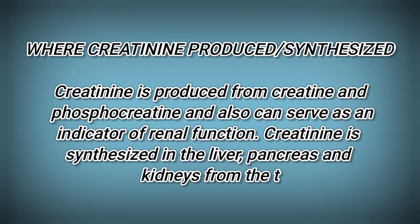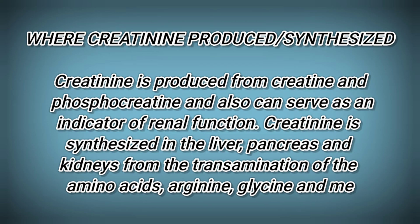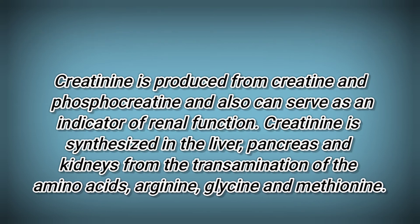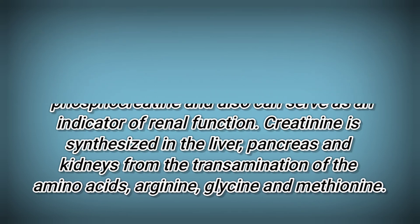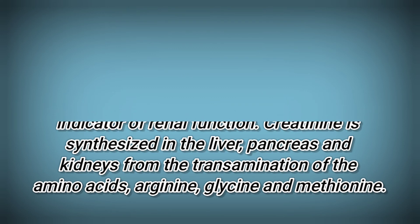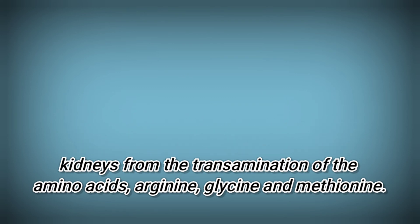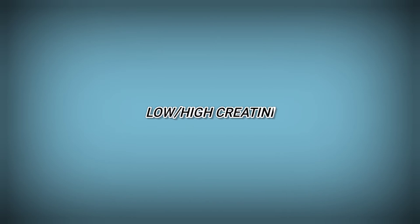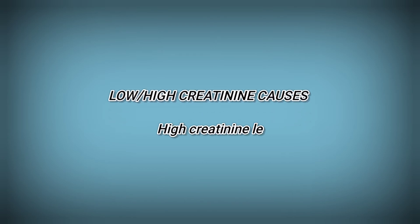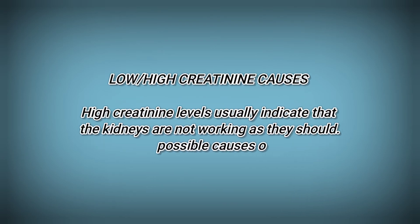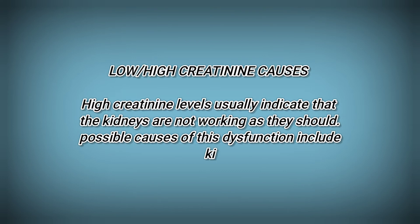Where is creatinine produced? Creatinine is produced from creatine and phosphocreatine, and can serve as an indicator of renal function. It is synthesized in the liver, pancreas, and kidneys from the transamination of the amino acids arginine, glycine, and methionine.